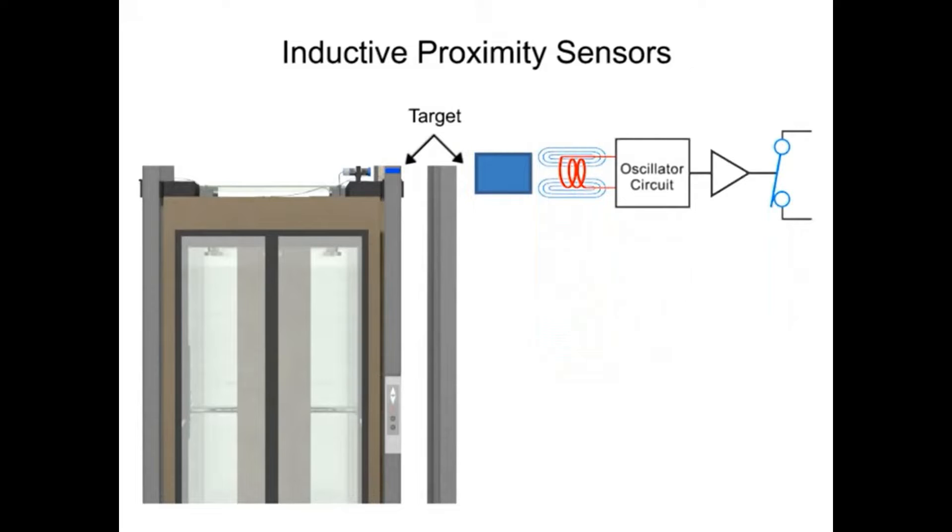electrical currents known as eddy currents are induced on the metal surface. These eddy currents induce a power loss within the oscillator circuit, and in turn cause a reduction in the amplitude of the oscillations. This is known as the echo or eddy current killed oscillator principle.